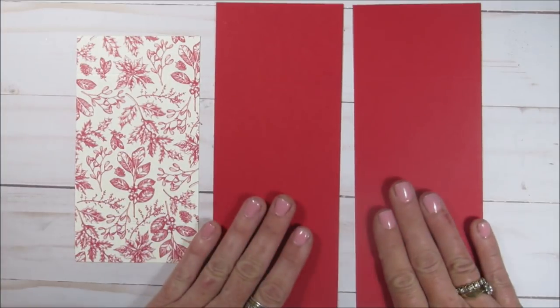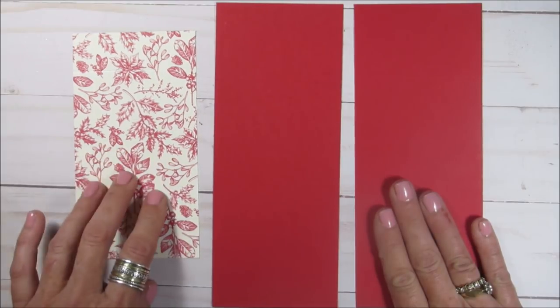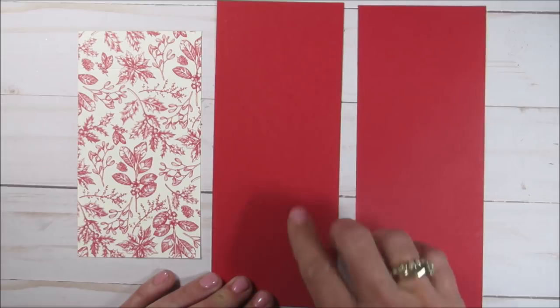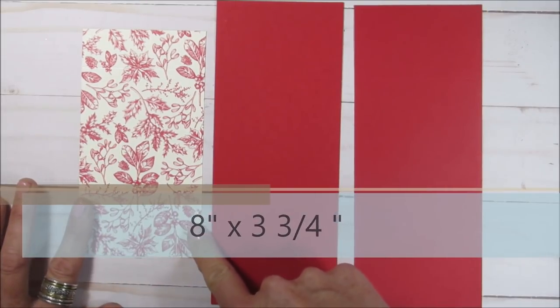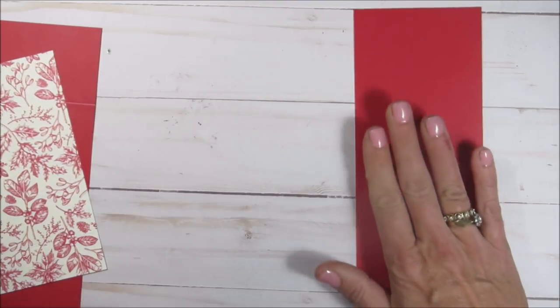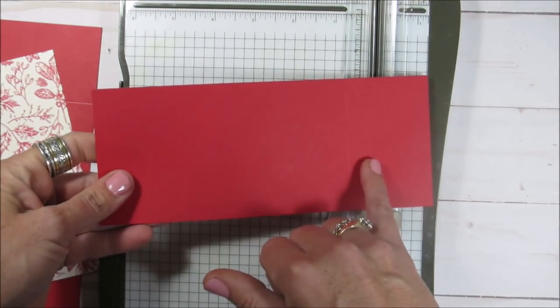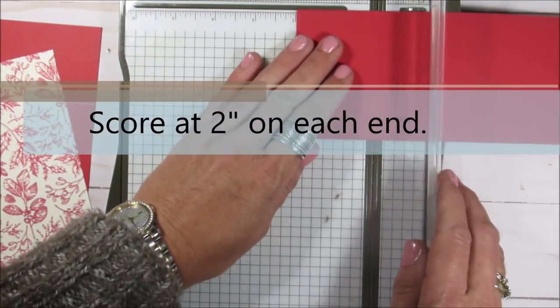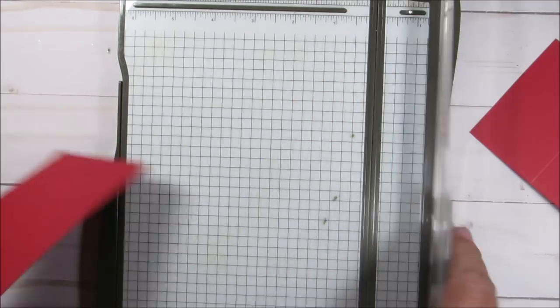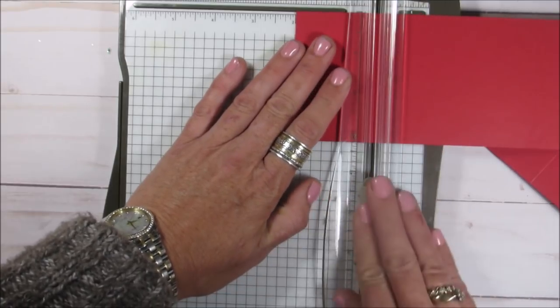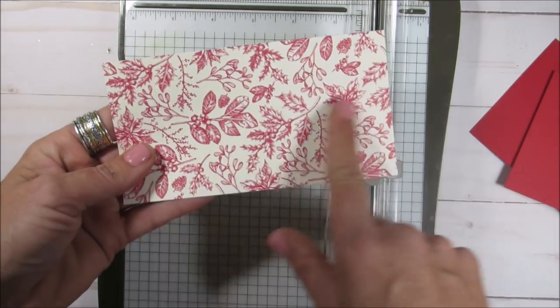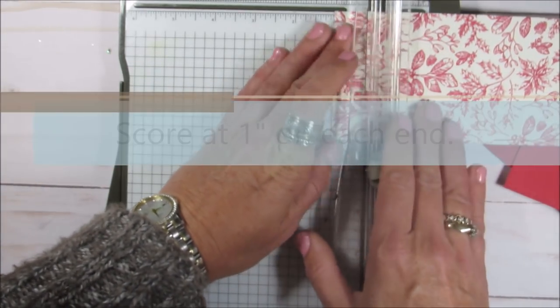To make this card you're going to need two pieces of card stock or designer series paper. These two pieces of real red card stock measure three and a quarter by eight inches. This piece measures three and a quarter by six. The two pieces that measure eight inches need to be scored at the two inch mark. This piece, the six inch piece, you want to score at one inch on both ends.